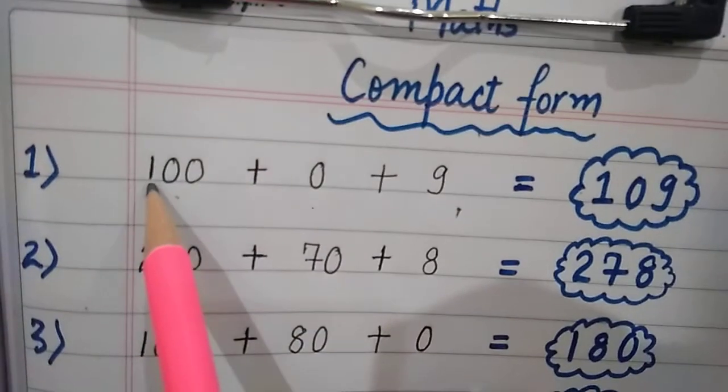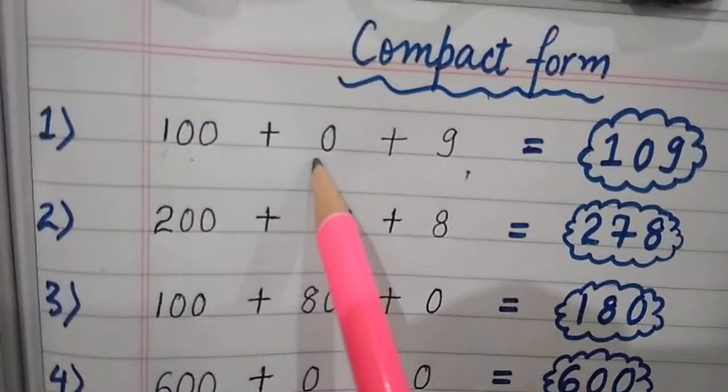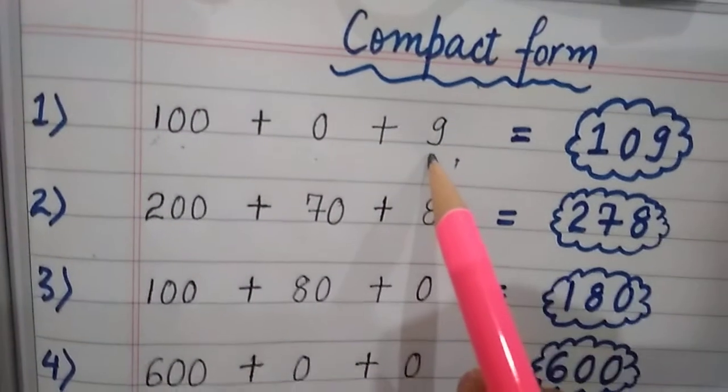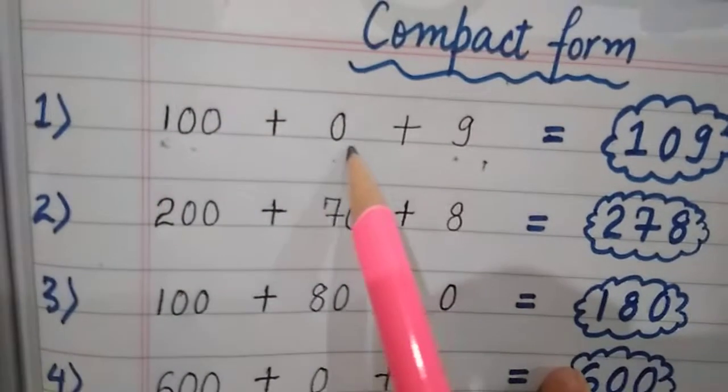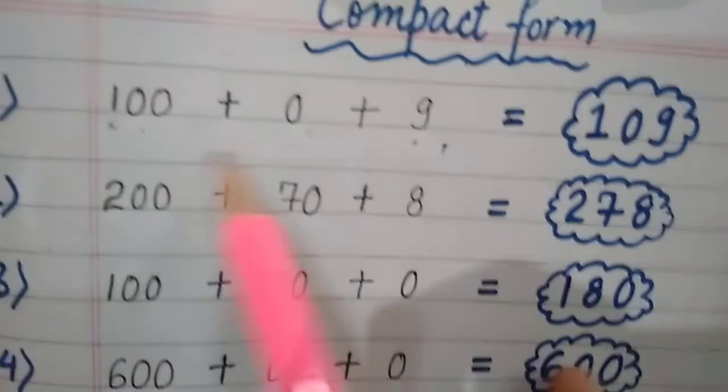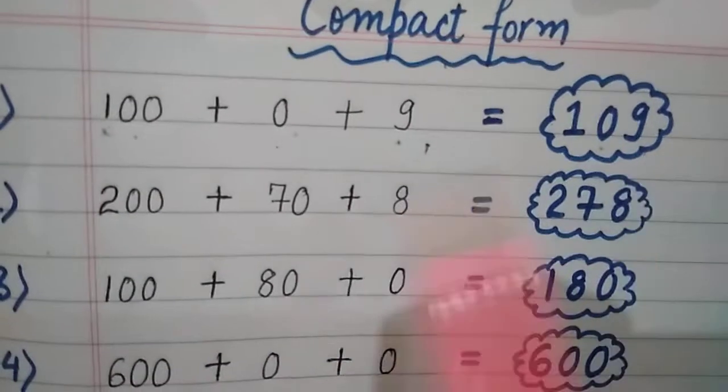Like 100, which is the first digit? 1. This number is 1. This number is 0. And this first digit is 9. So the answer is 109. So what do we do in the compact form? 109. Similarly,